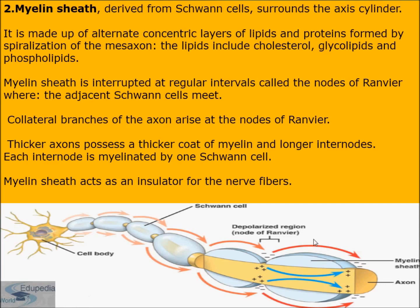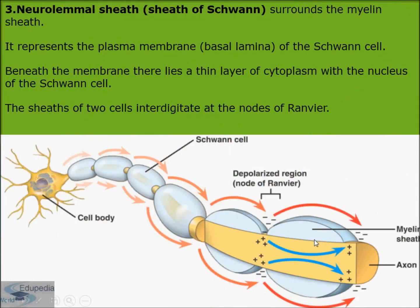The third part of the myelinated fiber is the neurolemmal sheath, also known as the sheath of Schwann, which surrounds the myelin sheath. It represents the plasma membrane of the Schwann cells. Beneath this membrane there lies a thin layer of cytoplasm with the nucleus of the Schwann cells.